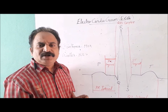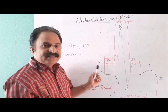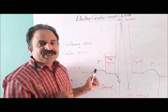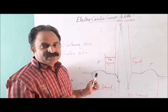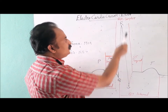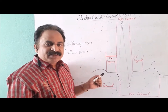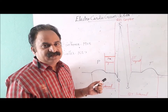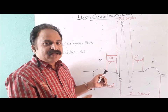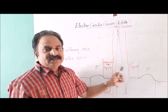P represents the development of action potential at the sinoatrial node. At this time, atrial muscles are depolarized and auricular contraction occurs. QRS is a complex that represents repolarization of atrial muscles and depolarization of ventricular muscle. That means the auricle will relax but the ventricle will start to contract — that is what the QRS complex represents.